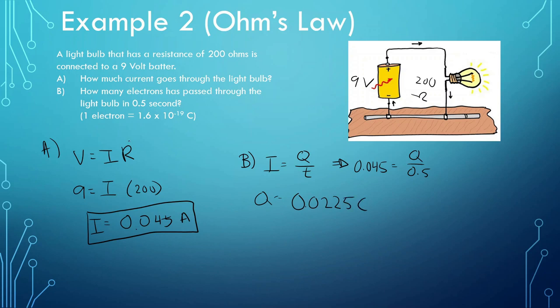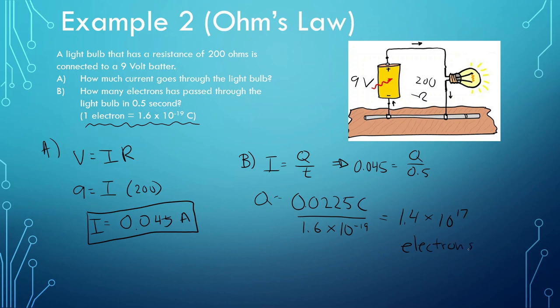We know one electron is equal to 1.6 times 10 to the negative 19, so we can just divide 0.0225 by 1.6 times 10 to the negative 19, and we get 1.4 times 10 to the power of 17 electrons. So again, a lot of electrons. Electrons are very small, so to power anything like a light bulb, it takes a lot of electrons moving very quickly.